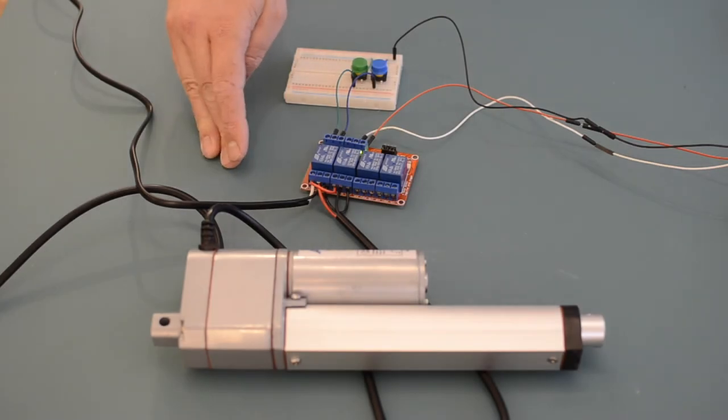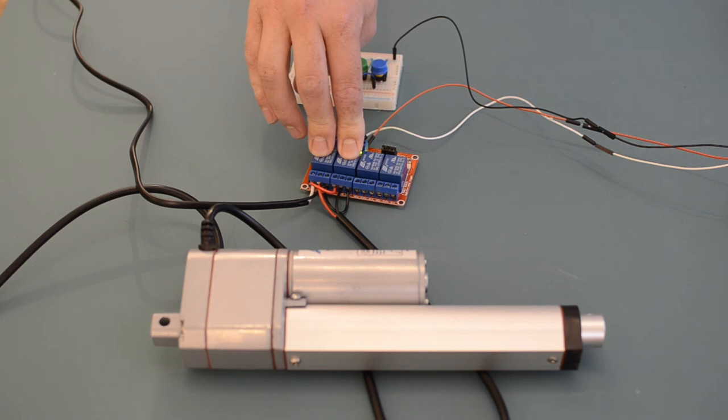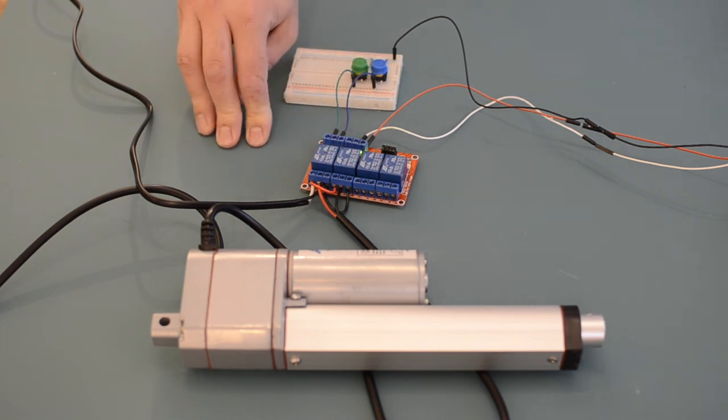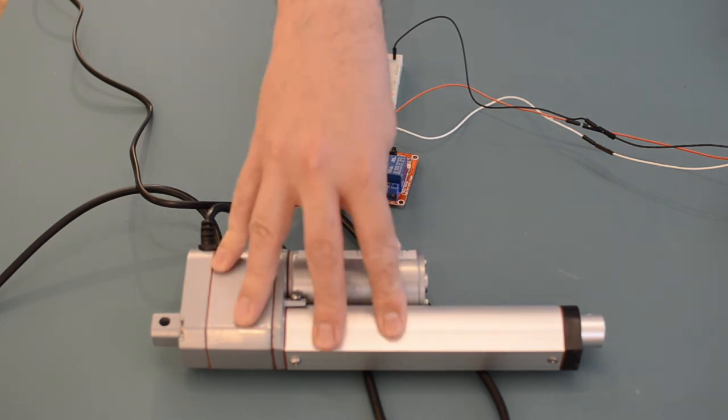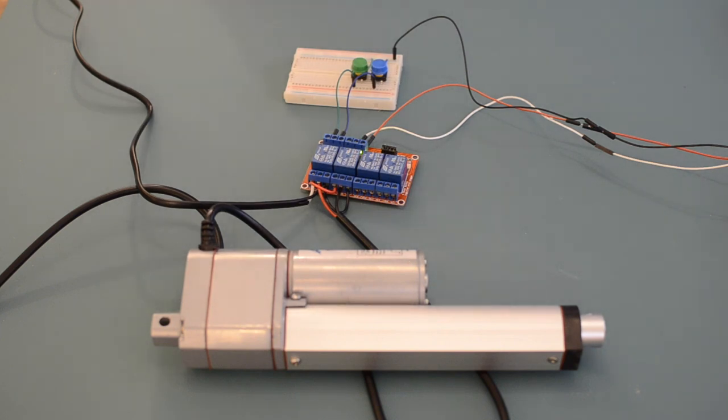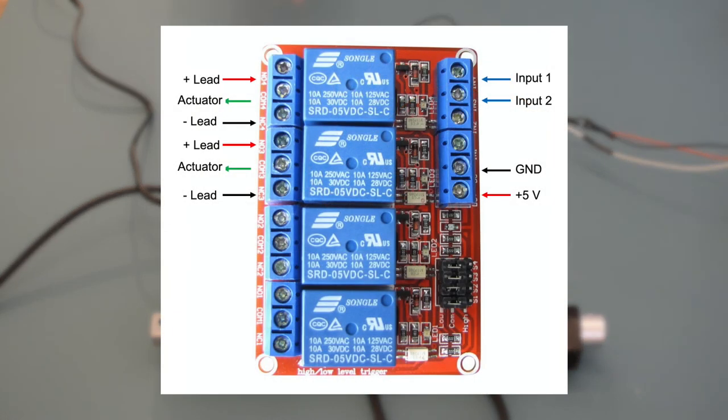This is the single pole double throw configuration. In this setup, I'm using two relays to control the direction of the polarity of the voltage to the linear actuator, as well as disconnecting the power to the linear actuator. I've connected the negative leads of the power supply to both of the normally closed positions of both of these relays, and connected the positive lead of the power supply to both of the normally open connections of the relays.